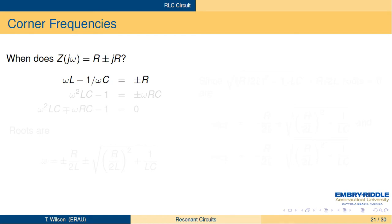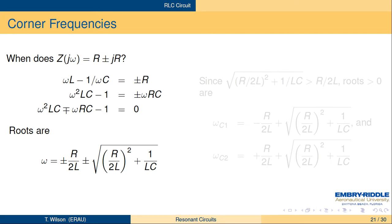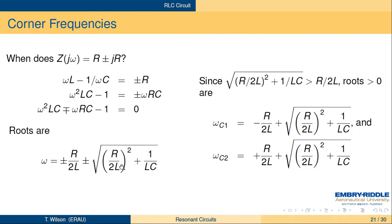Solving ωL − 1/ωC = ±R by multiplying through by ωC gives a quadratic in ω. The two positive roots are: ω = ±R/(2L) + √((R/2L)² + 1/LC). The lower corner frequency is √((R/2L)² + 1/LC) − R/(2L), and the upper is √((R/2L)² + 1/LC) + R/(2L). These are the half-power corner frequencies.